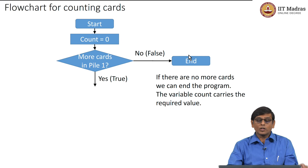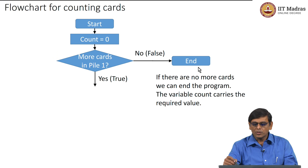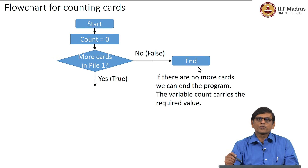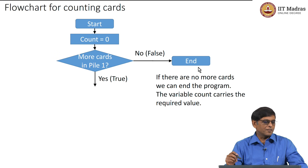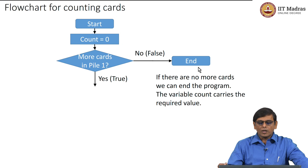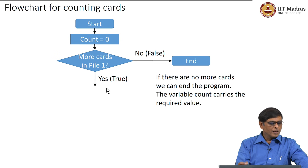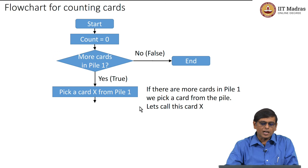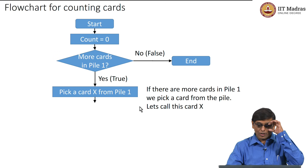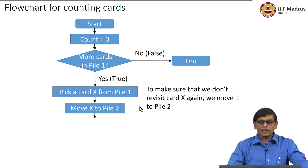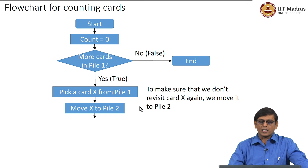At this point one could output the variable count's value, but when we reach 'end' the variable count carries the value of the number of cards. The other path is when there are more cards in pile 1, meaning the condition evaluates to true. Down that path we do the first step: picking a card from pile 1. We call this card x. So we pick card x from pile 1, and after picking it we move card x to pile 2 so that we do not visit it again.